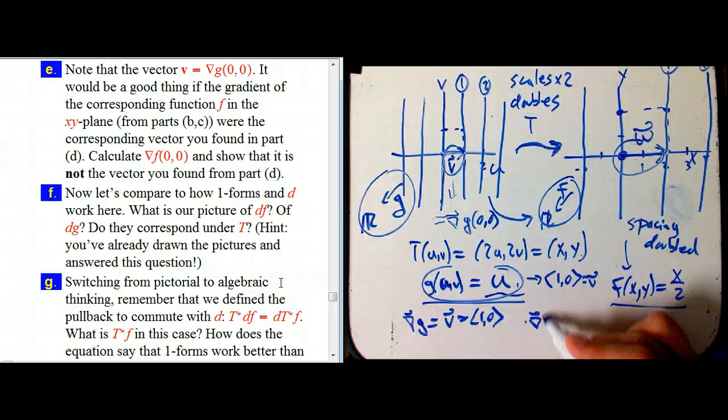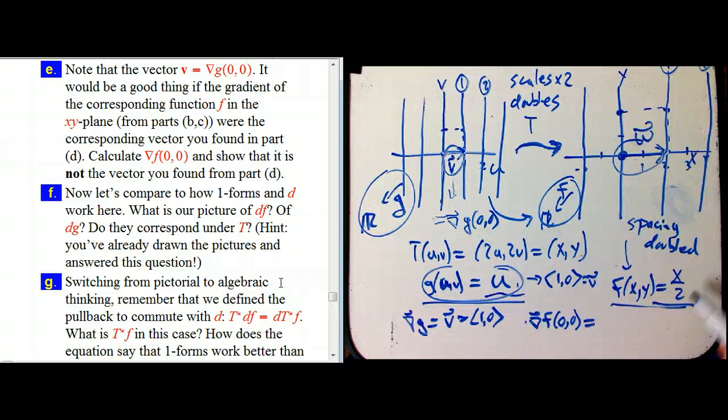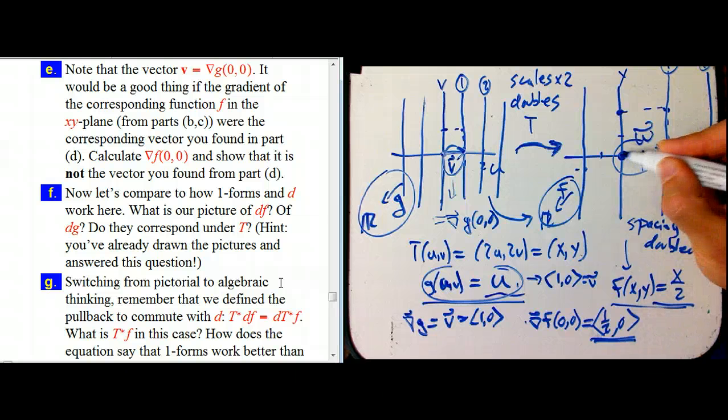So we've got the gradient of g is this v vector is 1, 0. The gradient of f, that's easily calculated. At 0, 0, it's a constant gradient, so it doesn't really matter. But at 0, 0 is going to be 1 half, comma, 0. 1 half times i. Let's make that angle bracket better.